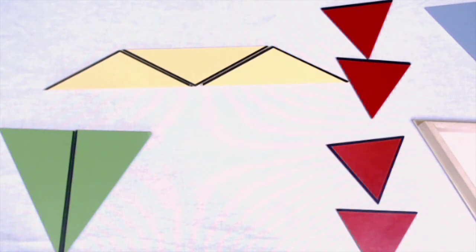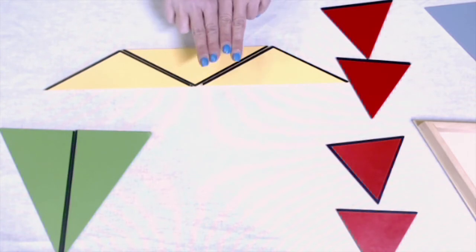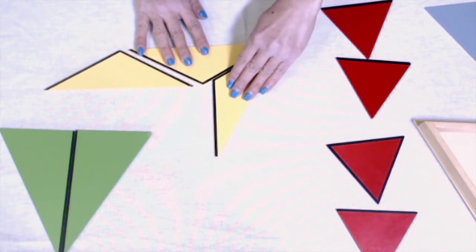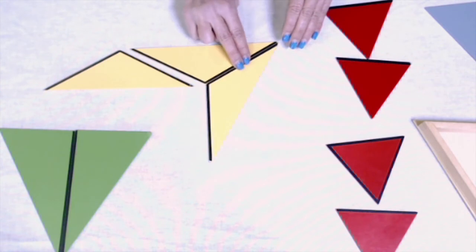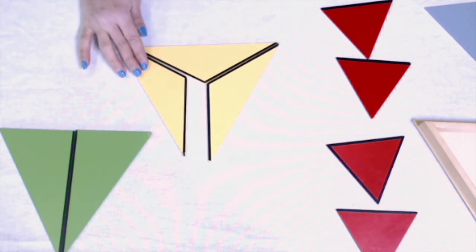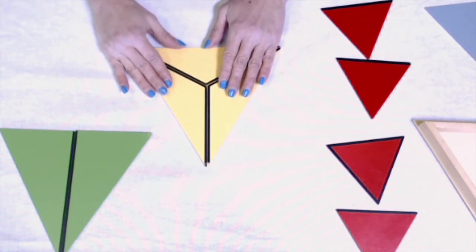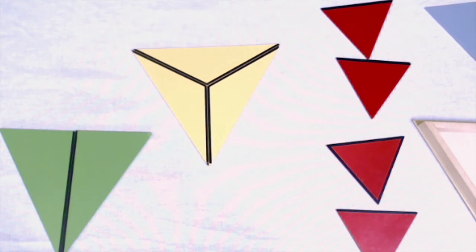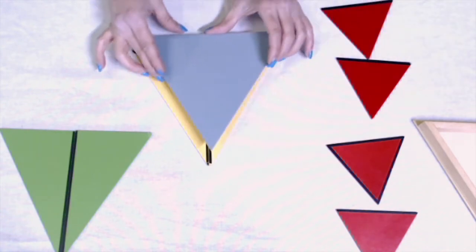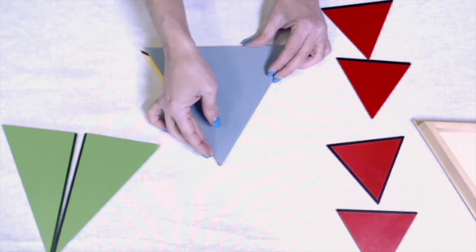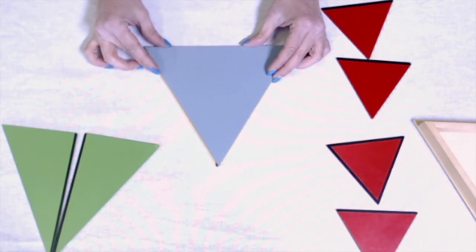To make a triangle with my isosceles triangles, I need all of my black lines to be touching or matching. Equilateral Triangle — I did it!